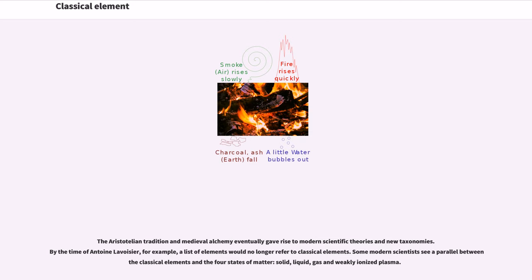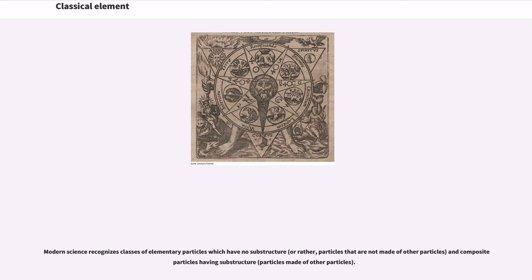The Aristotelian tradition and medieval alchemy eventually gave rise to modern scientific theories and new taxonomies. By the time of Antoine Lavoisier, for example, a list of elements would no longer refer to classical elements. Some modern scientists see a parallel between classical elements and the four states of matter: solid, liquid, gas and weakly ionized plasma. Modern science recognizes classes of elementary particles which have no substructure, or rather, particles that are not made of other particles, and composite particles having substructure, particles made of other particles.